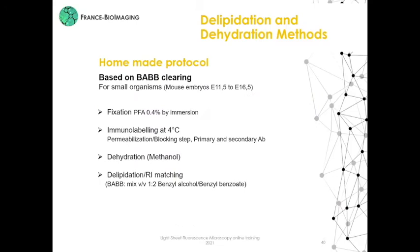We also have in the lab a homemade protocol based on BABB for small organisms like mouse embryos from E11.5 to E16.5, with the same kind of steps. The first fixation is softer at 0.4% by immersion. The immunolabelling is performed at 4°C. And the clearing step involves dehydration with methanol, delipidation, and RI matching with BABB. Here is an example of an embryo stained with this protocol.